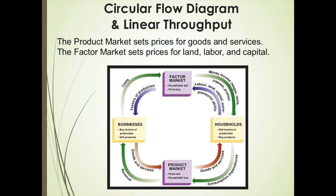We have provided a diagram here of the circular flow for all money and goods, as well as factors of production in the economy. Factors of production being that which is used to produce goods. Notice that the red lines move concrete material goods, while the blue lines move concrete items like the factors of production — land, labor, and capital — but the green lines only move money around in the economy.